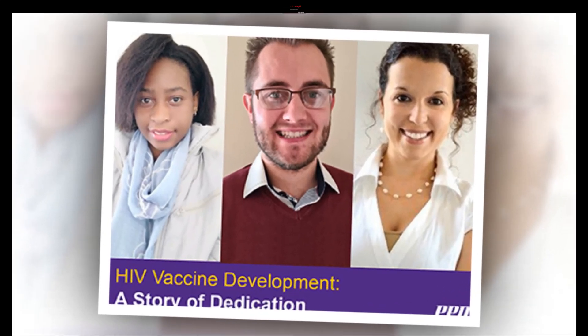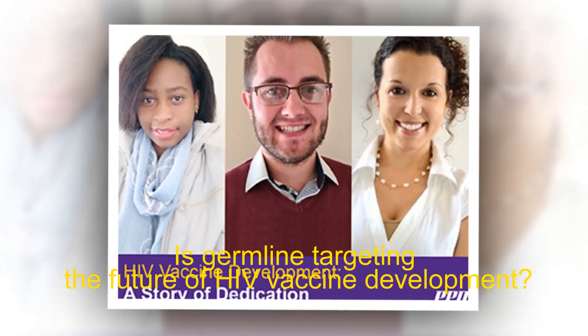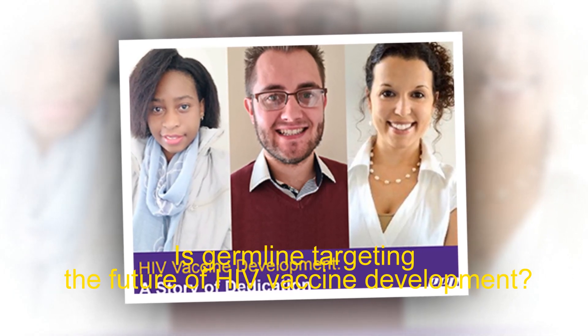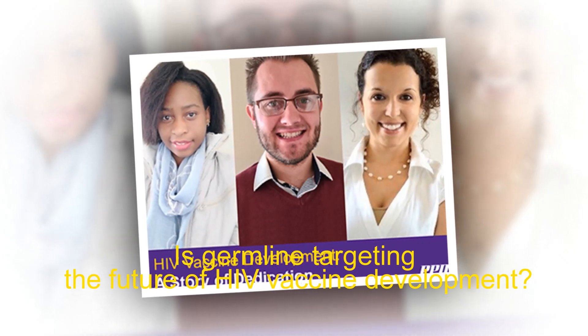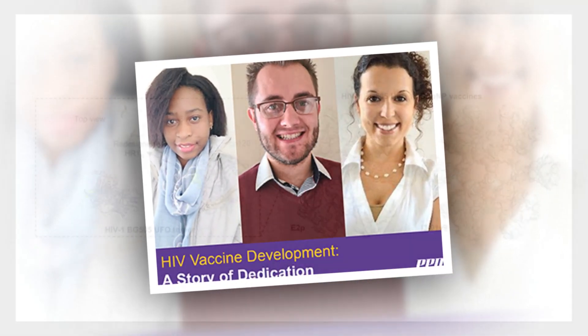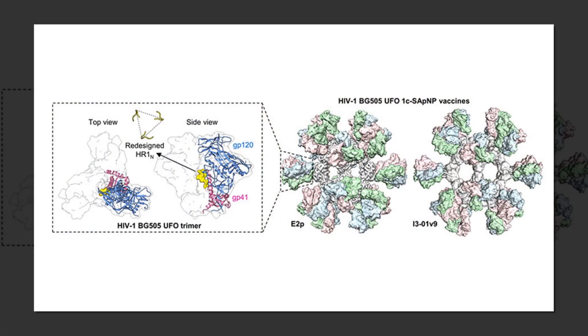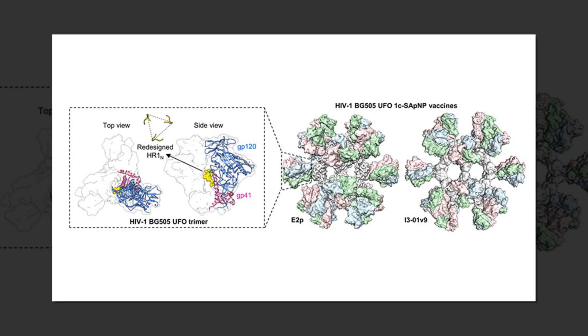Is germline targeting the future of HIV vaccine development? Despite four decades of effort, traditional vaccine approaches have been unable to prevent HIV acquisition because the virus mutates rapidly and hides from the immune system. Most experts think more sophisticated vaccine strategies will be necessary, and that the research and development process will probably take years.